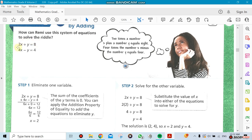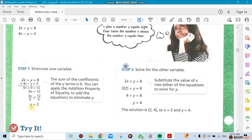2x plus y equals 8, 4x minus y equals 4. Now think about adding those two equations. If you add them up, you're going to end up with 6x plus 0, because y minus y is zero, and that's why we call it elimination—we eliminated one of the variables. 8 plus 4 is 12, and then you solve for x, so x ends up to be 2.